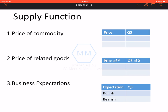Starting with the next very important topic — supply function. Agar ek functional relation established kiya jaye between supply and factors affecting supply, tho woh kehlata hai supply function. Ek factor ko jab pardate hain, tho baqi saare factors ko hum assume karte hain constant. Sabse pehle factor ke saath start karte hain — price. Agar price badh jayegi, tho zyada profitability dikhegi supplier ko, that is why quantity supplied will increase. Aur price ke kam hone pe quantity supplied kam ho jayegi. Kaisa relation hai? Positive relation hai with price.